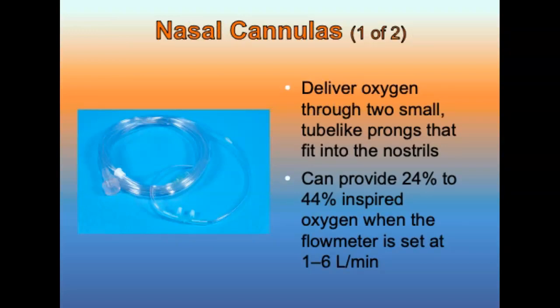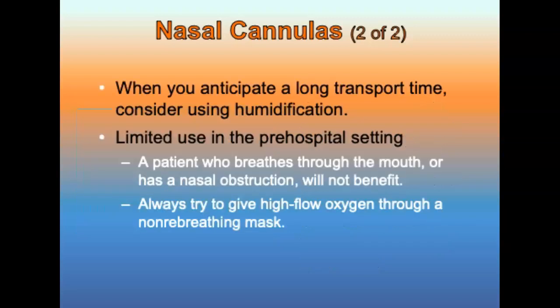A nasal cannula delivers oxygen through two small prongs that fit into the patient's nostrils. It can provide 24 to 44% inspired oxygen when the flow meter is set at 1 to 6 liters per minute. Flow rates above 6 liters per minute are not recommended for patient comfort. Over a prolonged period, a nasal cannula can dry or irritate the mucous membrane lining of the nose. A patient who breathes through the mouth or has nasal obstructions will get little or no benefit, so always try to give high-flow oxygen through a non-rebreather mask if necessary.